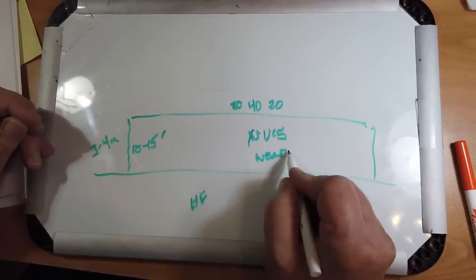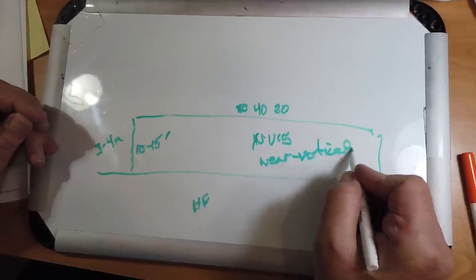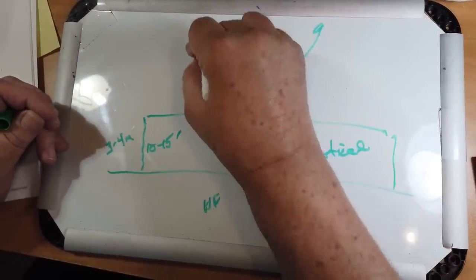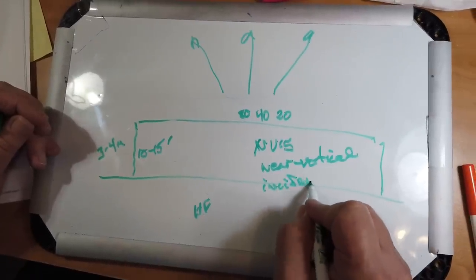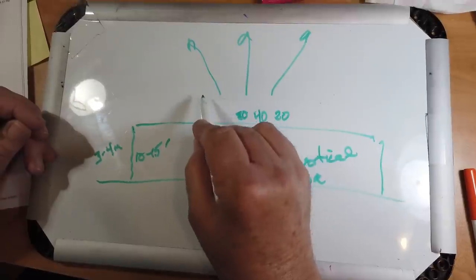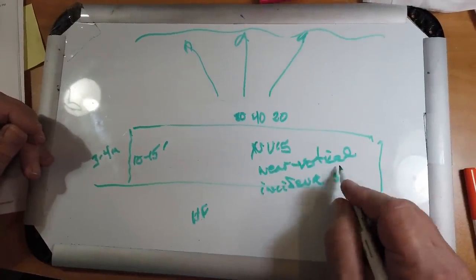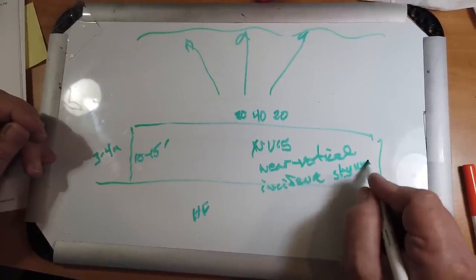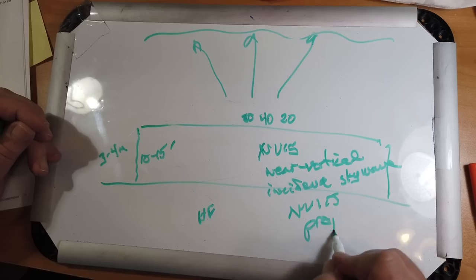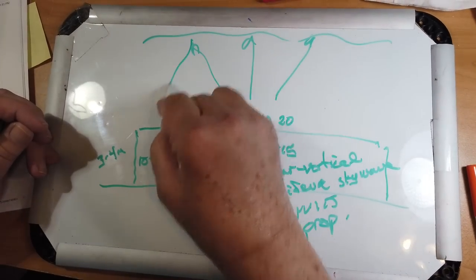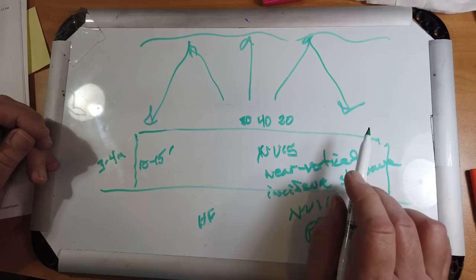Near, near vertical, meaning straight up, near vertical incidence. Incidence hitting the ionosphere, sky wave, or NVIS propagation. So these signals will come down fairly close to the earth.